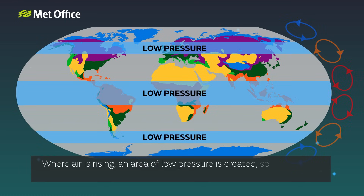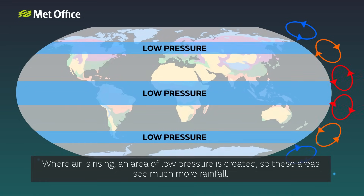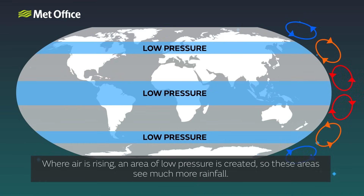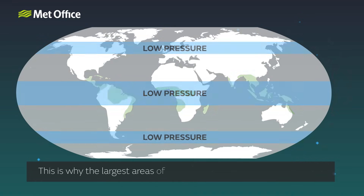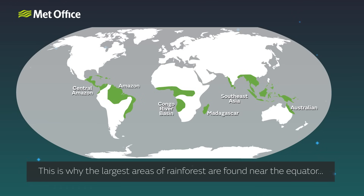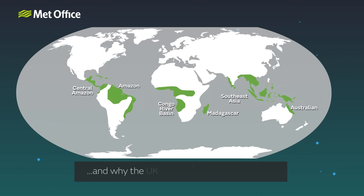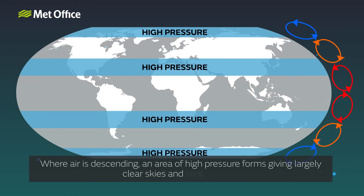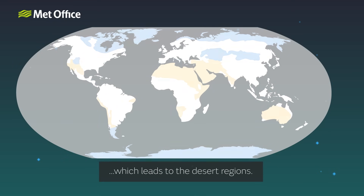Where air is rising, an area of low pressure is created, so these areas see much more rainfall. This is why the largest areas of rainforest are found near the equator, and why the United Kingdom has a relatively wet climate. Where air is descending, an area of high pressure forms, giving largely clear skies and little rainfall, which leads to the desert regions.